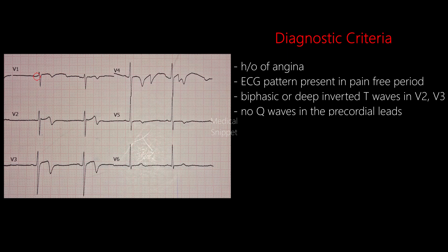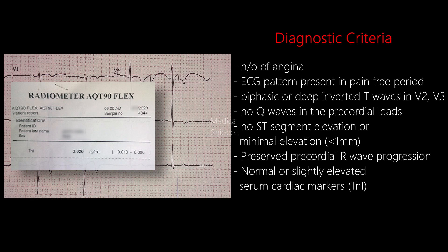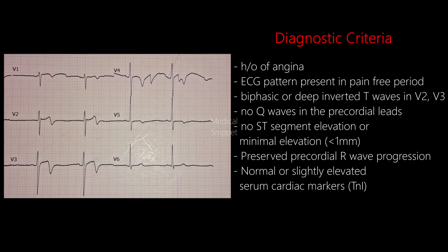It should be noted that there are no Q waves in the precordial leads. The ST segment is also not elevated and there is preserved precordial R wave progression. The patient also had normal serum cardiac marker, namely troponin I in this case. The diagnosis of Wellens syndrome mandates coronary angiogram.